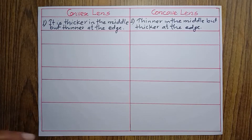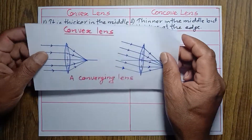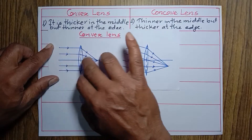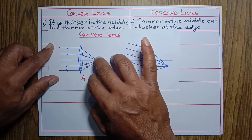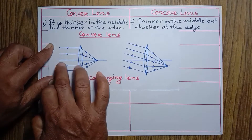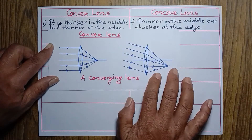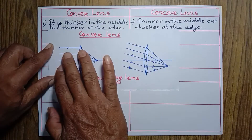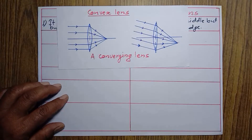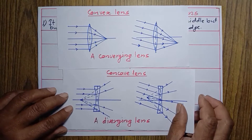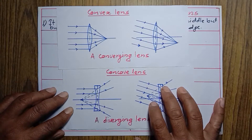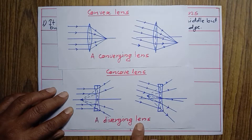Now I want to show you some diagrams and conclude another difference. Look at this — this is a convex lens. A convex lens converges the rays of light which fall on its surface, whether they are parallel to the principal axis or not parallel to the principal axis. But in the case of a concave lens, as we have seen in the previous class, it diverges the rays of light.